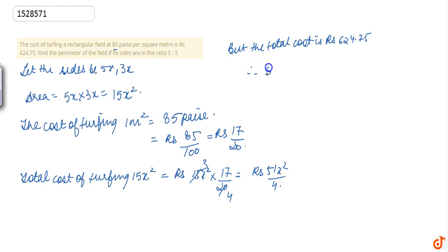Therefore, 51x square by 4 equals to 624.75. Then, x square equals to 624.75 into 4 by 51. After removing the decimal, 51 into 1225 is 624.75, and 4 into 25 is 100.